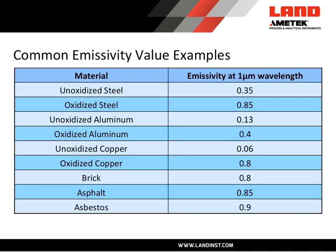In this slide we see emissivity value examples for common materials. Unoxidized steel — think of that as liquid steel — has an emissivity of 0.35. Whereas if it is oxidized and rough and dark, it has a higher emissivity of 0.85, emitting 85% of its energy. If we look at aluminum, unoxidized aluminum has a very low emissivity around 0.13, and fully oxidized aluminum has a higher but still not very high emissivity of 0.4.